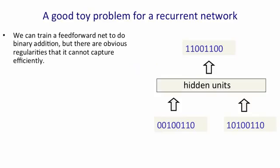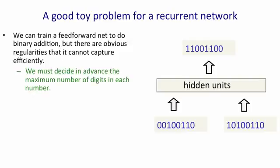So consider the problem of adding up two binary numbers. We could train a feedforward neural network to do that. The diagram on the right shows a network that gets some inputs and produces some outputs. But there's problems with using a feedforward neural network. We have to decide in advance what the maximum number of digits is for both of the input numbers and for the output number.